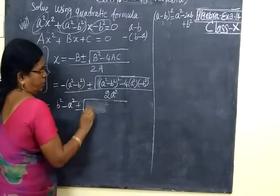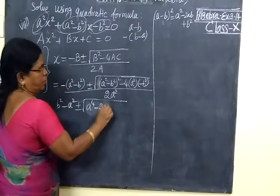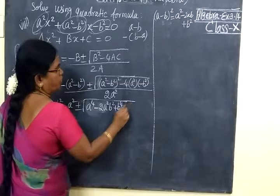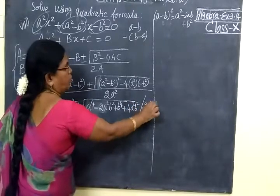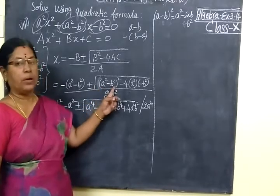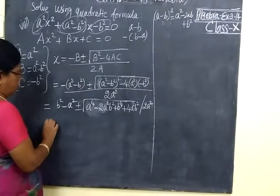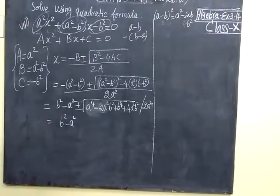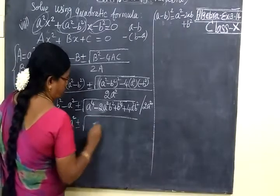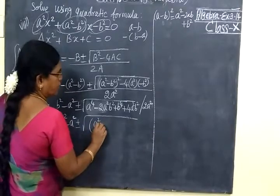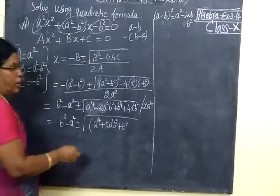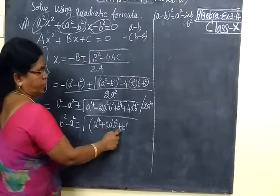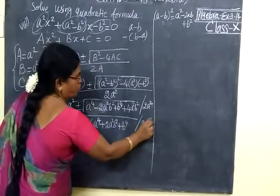Since we are having a square, we write: the expression under the root is A⁴ - 2A²B² + B⁴, then the minus into minus gives plus, so plus 4A²B², all divided by 2A². So the expression becomes B² - A², plus or minus root of A⁴ + 2A²B² + B⁴, all divided by 2A².